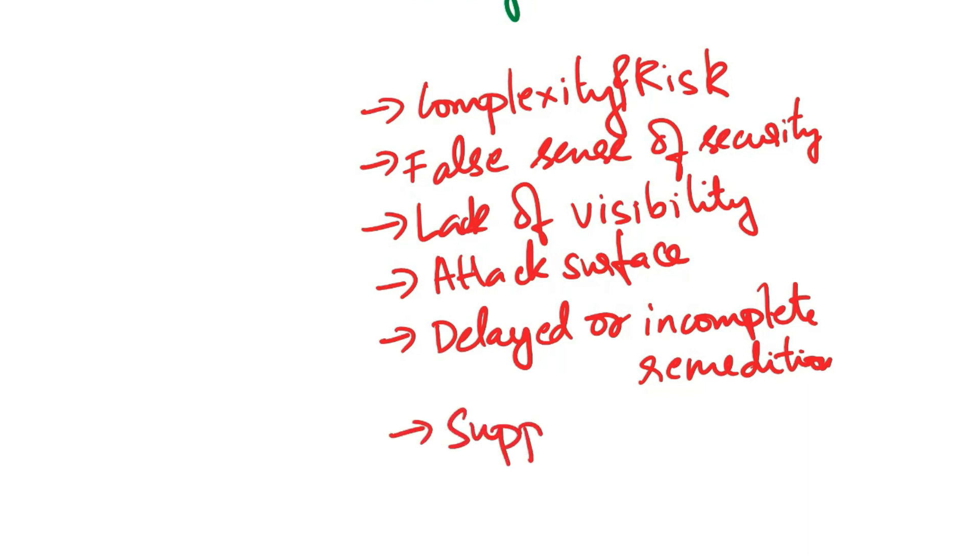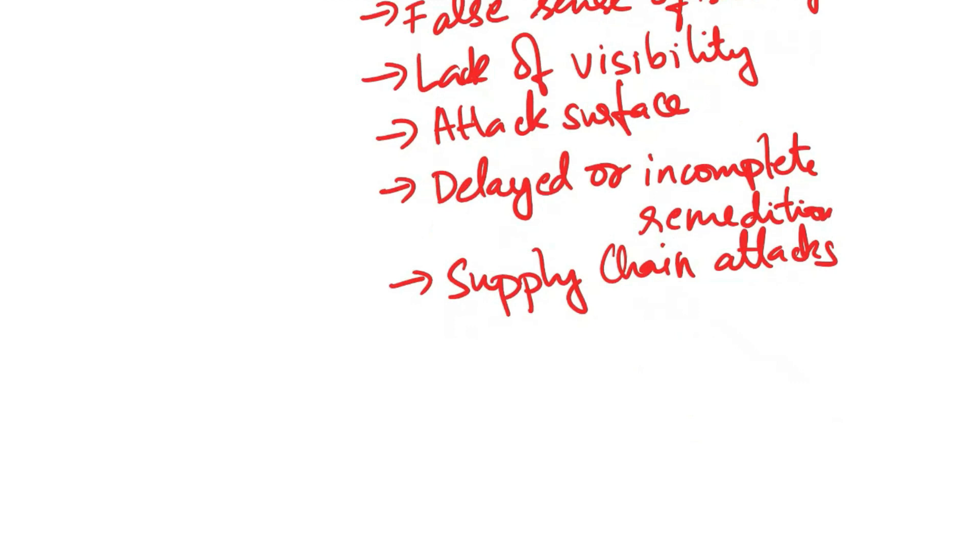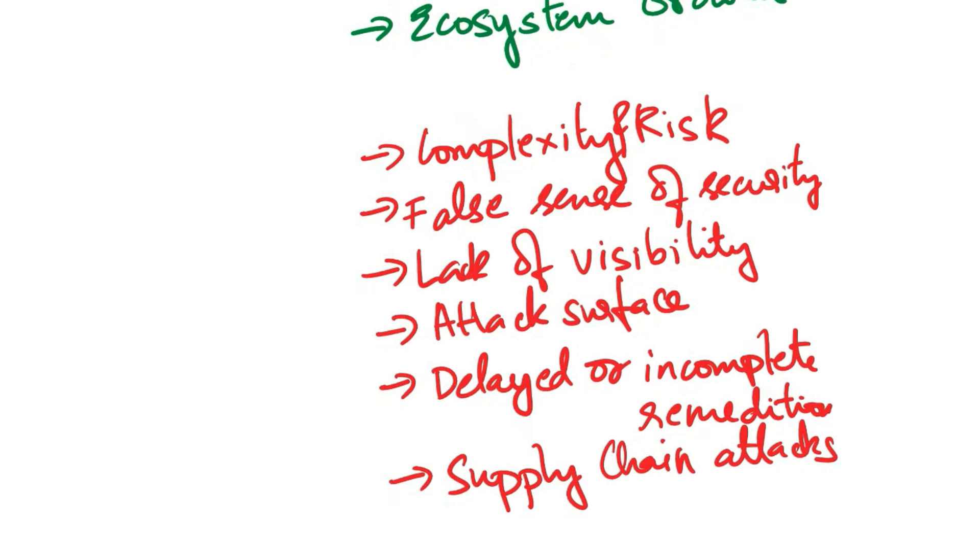Next is supply chain attacks. Vulnerable third-party libraries can be a target for supply chain attacks. Attackers may compromise the library's source code or distribution channels, impacting all software projects that depend on it. So, because of all these risks, it is essential for software development teams to implement robust software composition analysis practices.